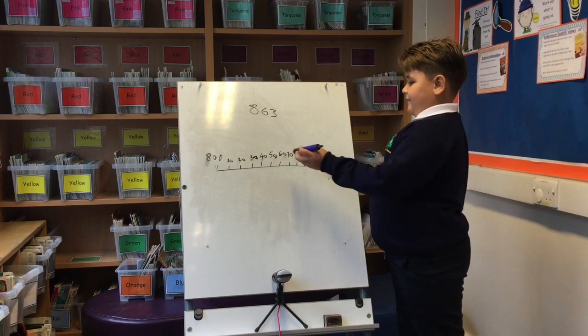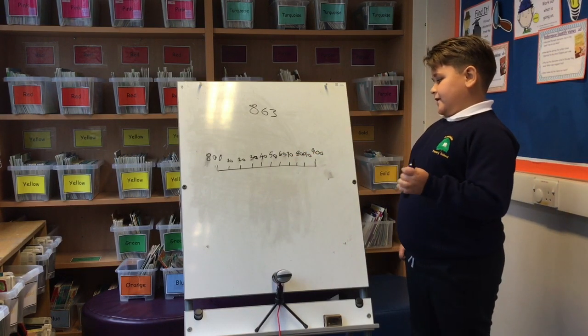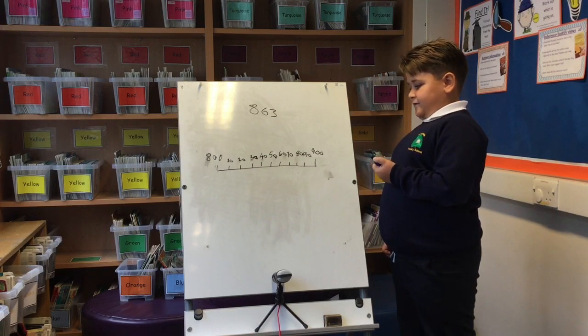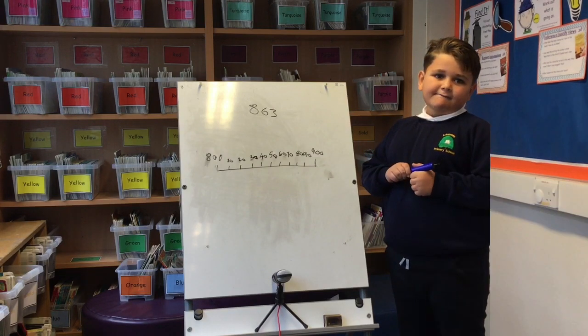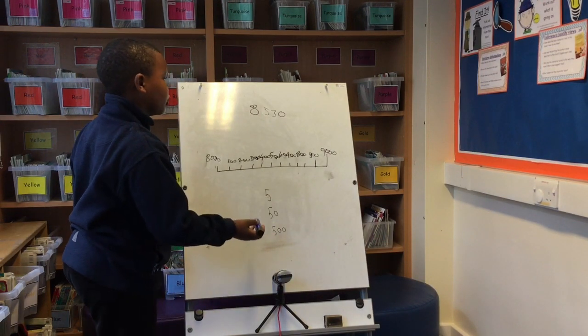The number goes here, and because 5 and above rounds up, the answer is 900. 5 rounds up, 50 rounds up, and 500 rounds up.